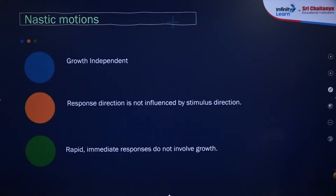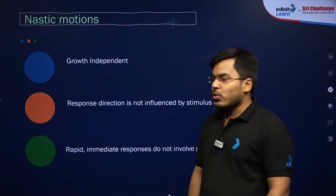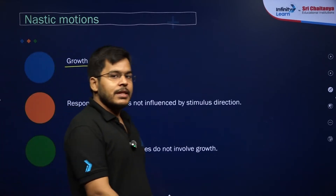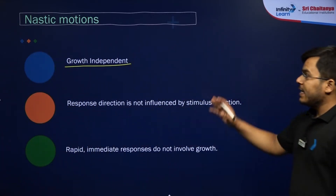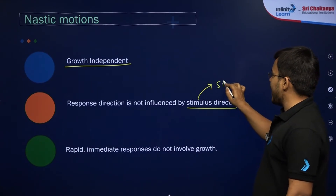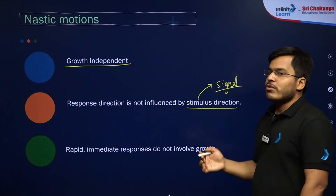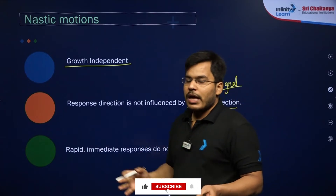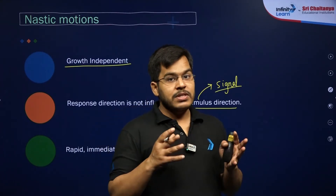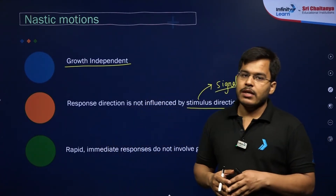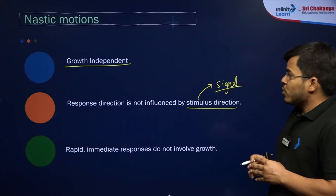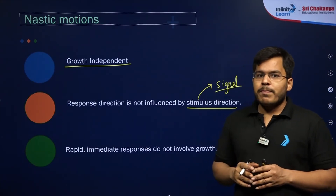First, let's talk about nastic movements. Nastic movements are movements that are growth independent — they have nothing to do with the growth of the plant. These nastic movements will not be influenced by the direction of the stimulus. A stimulus is any signal that the plant receives from the outside surroundings. Any movement happening in plants depends on signals — some created within the organism's body, some from outside surroundings.